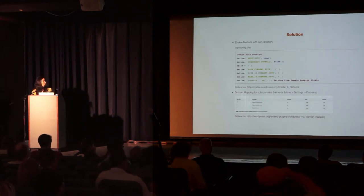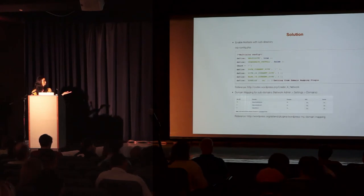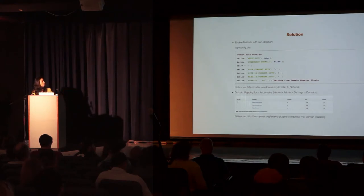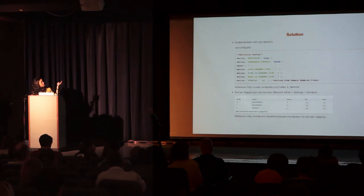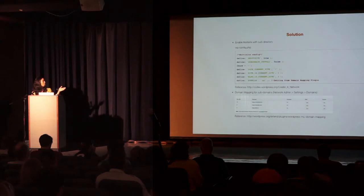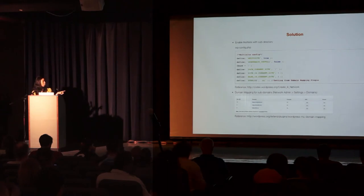Once you enable multisite — and I won't go step-by-step since WordPress Codex has robust instructions with a reference link — in your wp-config you'll have entries similar to this. MULTISITE is true, and since we enabled it as sub-directories, SUBDOMAIN_INSTALL was false for us. The following entries are based on your server setup, and the bottom one is for the Domain Mapping plugin.